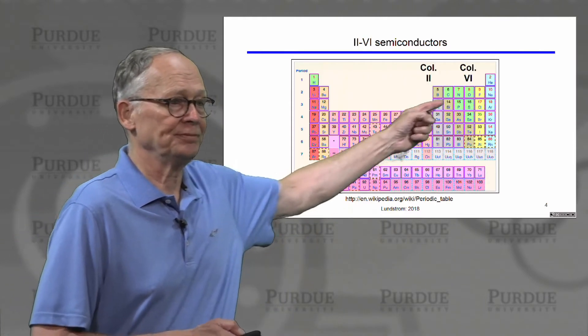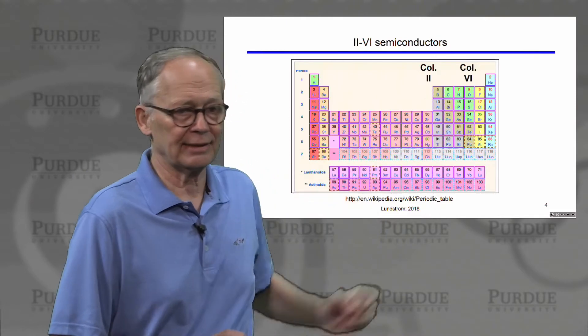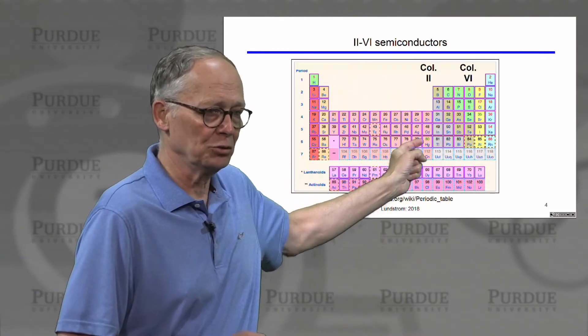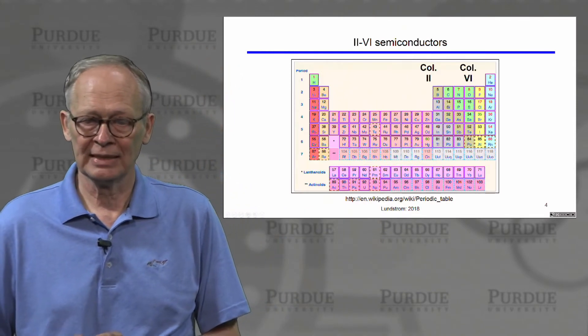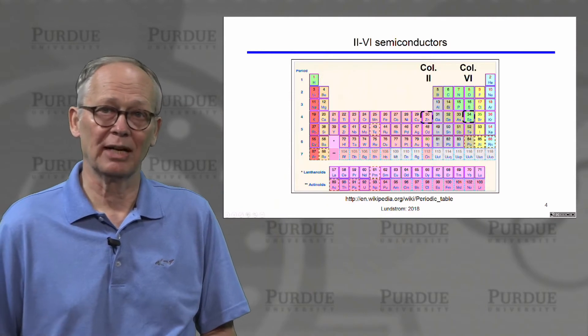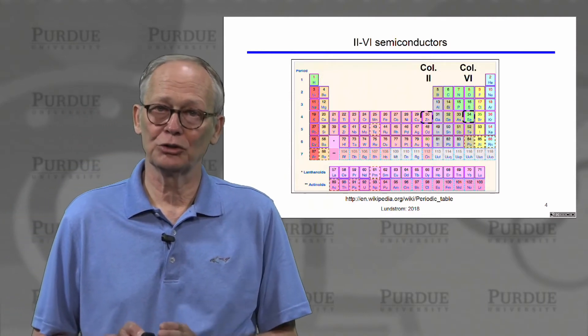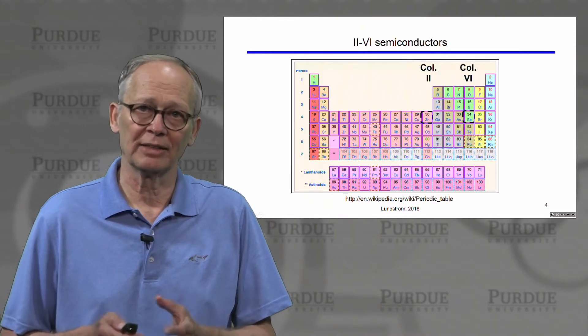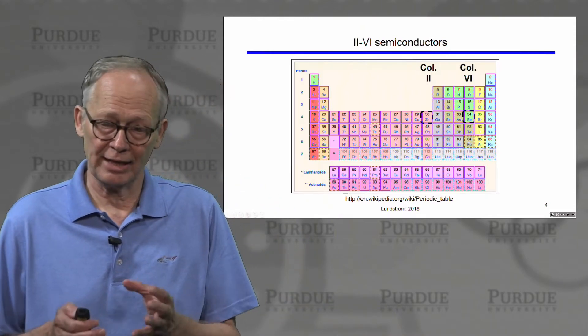So we can continue. In column six, there are six valence electrons per atom. In column two here, there are two valence electrons per atom. Zinc is from column two. Selenium is from column six. These would be called two six semiconductors. On average, there would be four valence electrons per atom. And they would behave as semiconductors also.